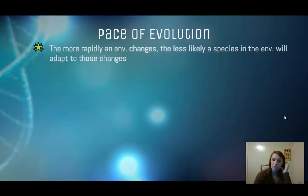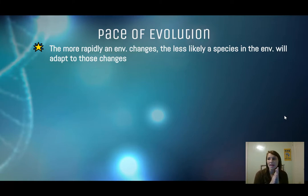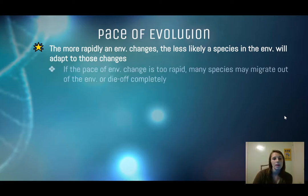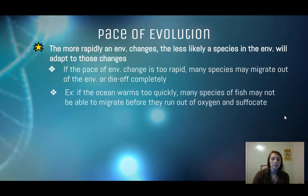When talking about the pace of evolution, the more rapidly an environment changes, the less likely a species will be able to slowly adapt, because changes in DNA and traits being passed on take generations — it's not something that happens quickly. If environmental change is happening too rapidly, many species are either going to have to migrate out or die off completely. For example, if the ocean warms too quickly, many species of fish won't be able to migrate to cooler areas because they'll run out of oxygen and suffocate first.